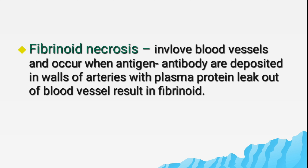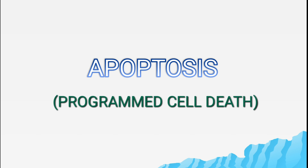Fibrinoid necrosis involves the blood vessel. It occurs when antigen-antibody complexes are deposited in the wall of the artery along with plasma proteins, which then leak out of the blood vessel, resulting in fibrinoid material — therefore it is called fibrinoid necrosis.